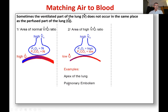A clinical example would be a pulmonary embolism. If something gets stuck in the blood supply, slowing down the perfusion to that part of the lung, then you'll have a high ventilation-perfusion ratio in that region with abnormal blood gases.